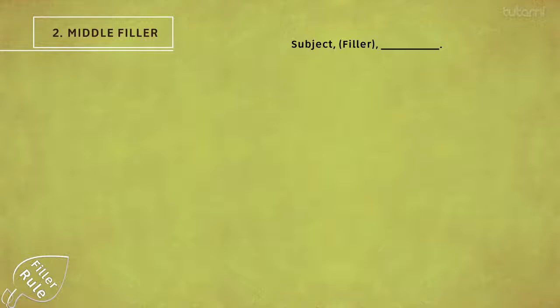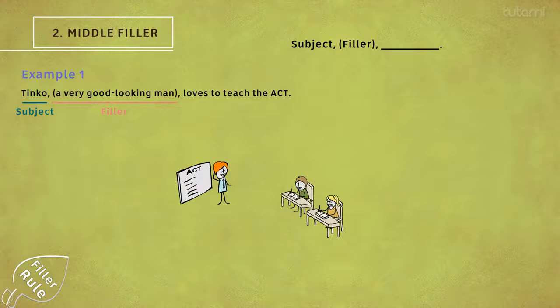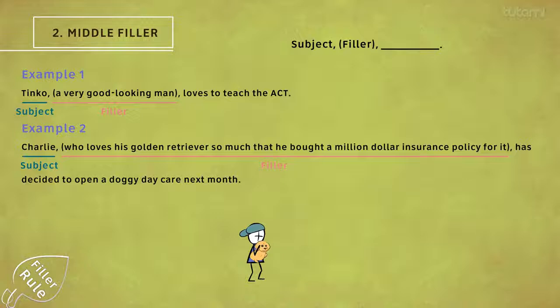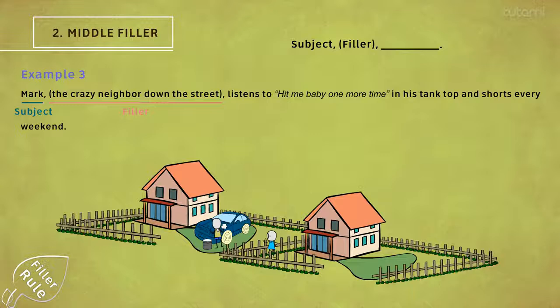Like in these examples. Example number one: 'Tinko, a very good looking man, loves to teach the ACT.' Example number two: 'Charlie, who loves his golden retriever so much that he bought a million dollar insurance policy for it, has decided to open a doggy daycare next month.' Example number three: 'Mark, the crazy neighbor down the street, listens to Hit Me Baby One More Time in his tank top and shorts every weekend.'